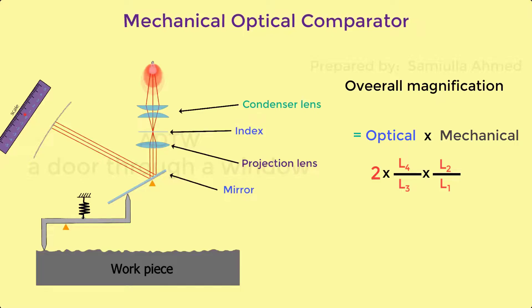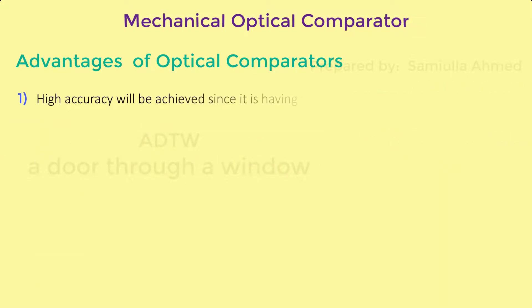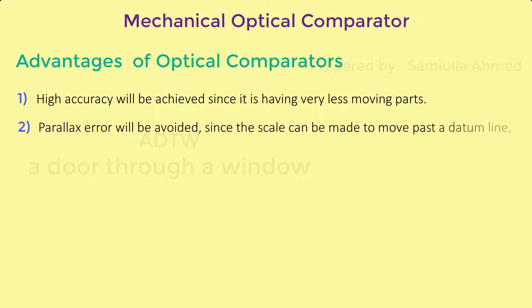Now let us see the advantages and disadvantages of optical comparators. Advantages: 1. Higher accuracy will be achieved since it is having very less moving parts. 2. Parallax error will be avoided since the scale can be made to move past a datum line without having any parallax error.